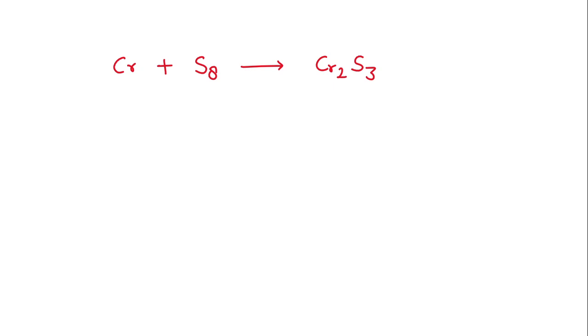We have a chemical equation: chromium plus sulfur element will give us chromium third sulfide, that is Cr2S3. Now we are going to balance this reaction.